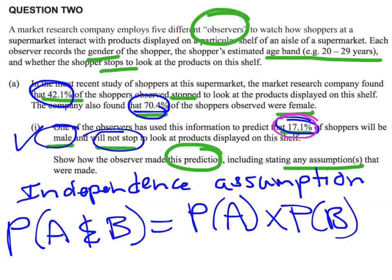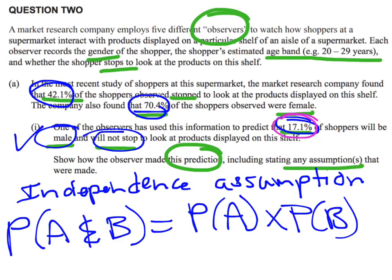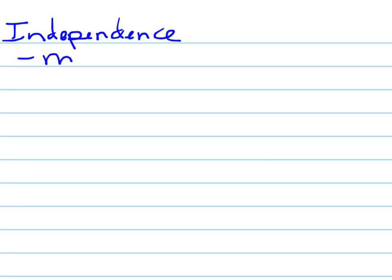And so that's what they stated. So what we've just done now is the first part: show how the observer made this prediction. The observer made the prediction that these events are independent, and therefore they use this independence rule to work out the probability of being male and not stopping. The last part of it, stating any assumptions. We're talking about that independence, and I want you to tell me exactly what we're assuming independence of. We've got two types of information: whether they are male or female, and whether they stopped or did not stop.